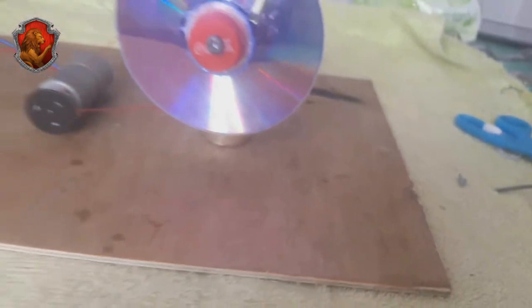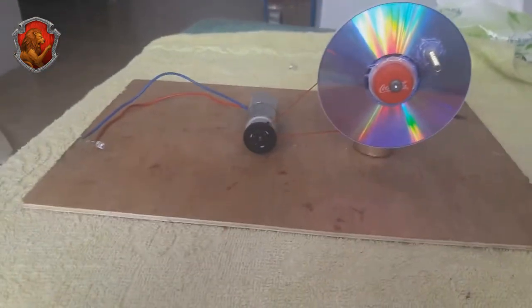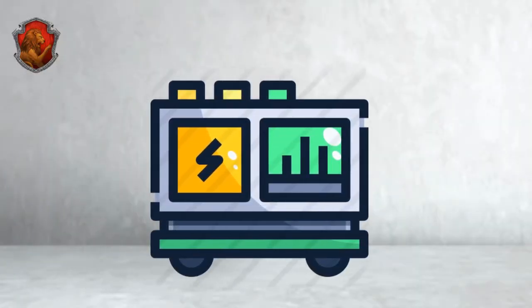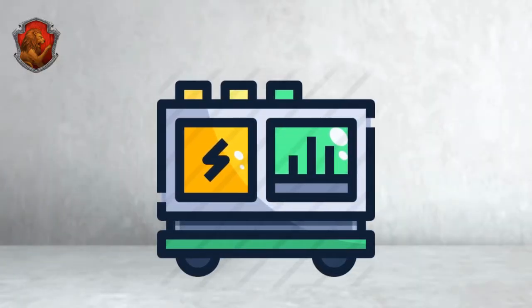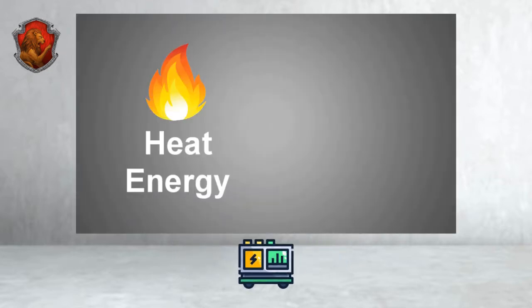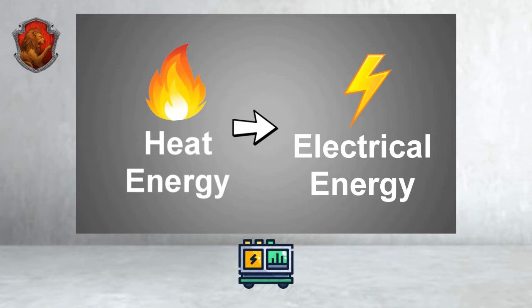We aren't going to build an electric generator to provide your house with electricity. Rather, we'll build a small experimental generator. Electric generators can be called energy converters as they convert heat energy or kinetic energy, energy from motion, into electrical energy.